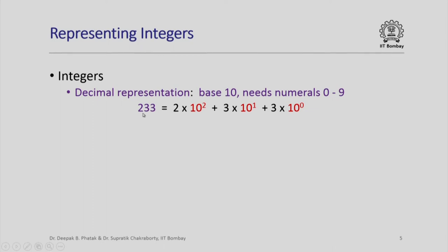So for example, when I write a decimal number like 233, I am really using base 10, which basically means that to interpret this number I take 2 and multiply it by a power of 10 — in this case 10 squared — then I take 3 multiplied by 10 raised to 1, and this 3 is multiplied by 10 raised to 0, and I add all of them to get the value. We call it base 10 because the number we are raising to various powers is 10, and in base 10 representation the digits we need are from 0 to 9.